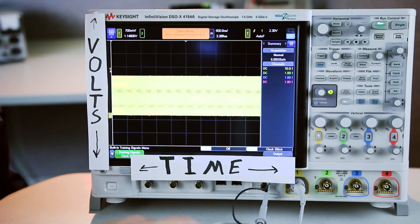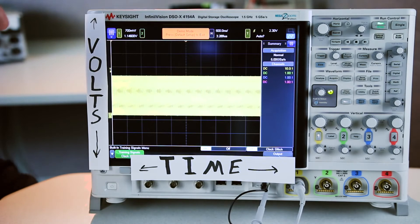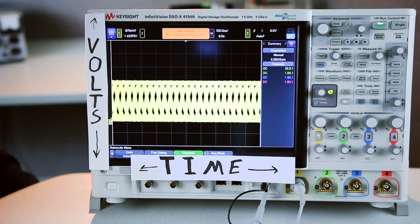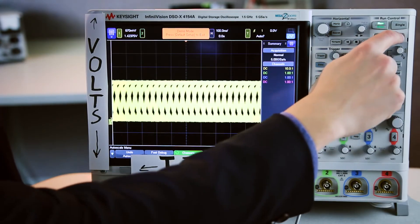So you walk into the lab you take your probe and you attach your signal for the first time and maybe you see something like this. What do you do? The easiest way to get from seeing a useless signal to a useful signal is the auto scale button.